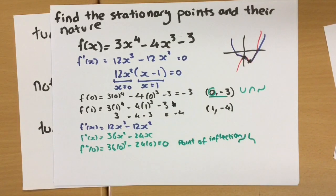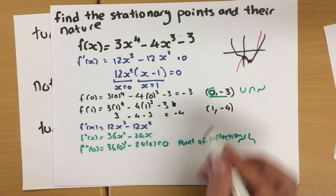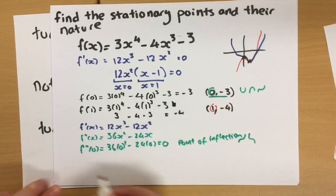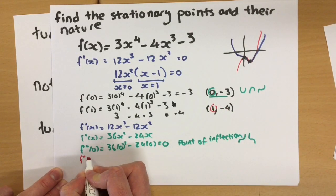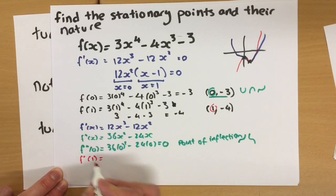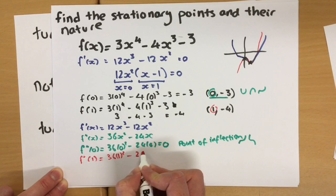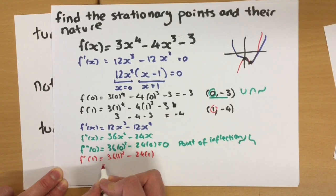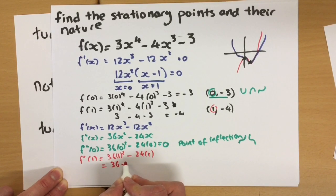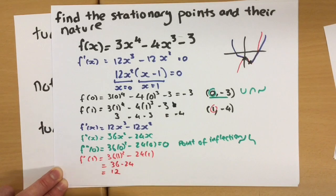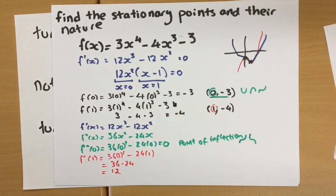Okay, let's look at our other point. So when x is one, we substitute one into our second derivative. So 36 times one squared take 24 times one, which is 36 take 24, which is 12. Now the common mistake here is you go, ooh, it's positive. It must be a maximum. It's not.